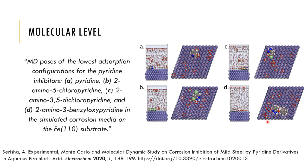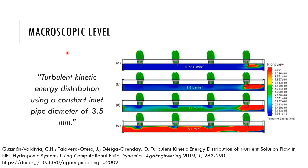Once we have qualified which inhibitor we need to use, we can make use of fluid dynamics. There have been some studies where fluid dynamics has been used to show how the corrosion inhibitor can flow through the pipeline. This example is taken from the agricultural sector, where they have shown how different flow rates can transport a nutrient solution through a pipe to the different spots where plants have been placed.